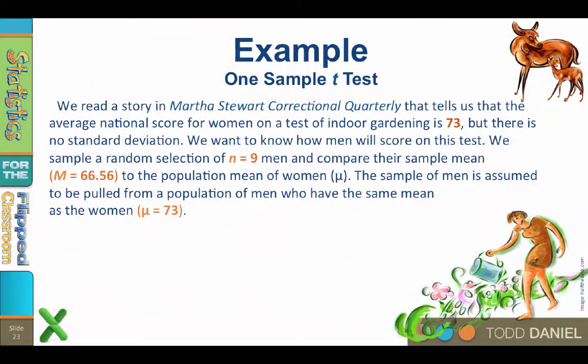Here is the example that we will be using. We read a story in Martha Stewart Correctional Quarterly telling us that the national average score for women on a test of indoor gardening is 73. So mu, the population mean, equals 73. But there is no standard deviation. We want to know how men will score on this same test. We will assume that no gender differences exist, so men should have a population mean of 73, just like the women.